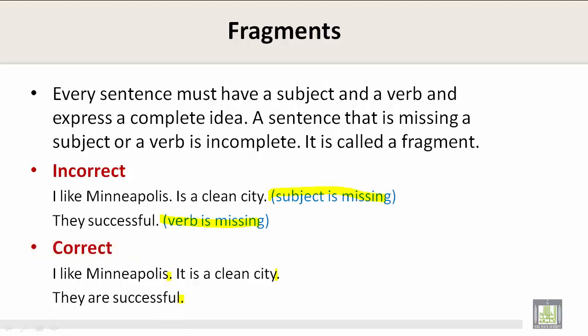In sentence number one, we said the subject was missing. Where was the subject missing? Right here — 'It is a clean city.' In sentence number two, the verb was missing. How did we fix that? 'They successful' becomes 'They are successful.' Where is the verb? 'Are.'